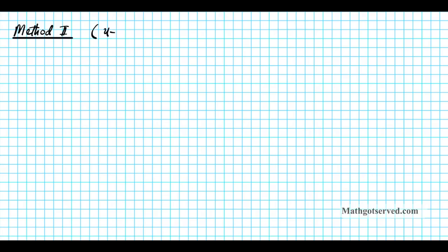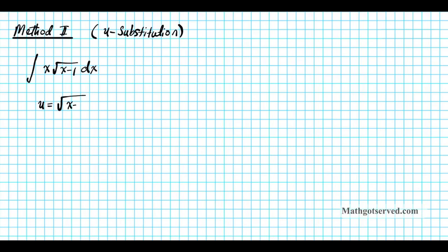Now let's take a look at Method 2. We're doing the same problem, but this time using only u-substitution, unlike Method 1 where we used two different methods simultaneously. We're evaluating the integral of x root of x minus 1 dx.